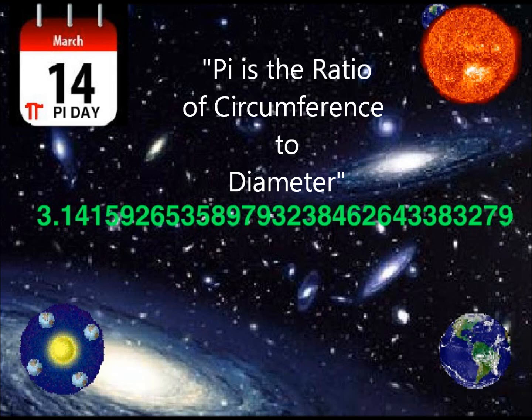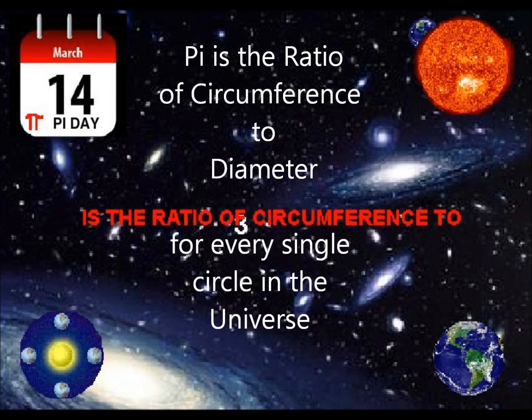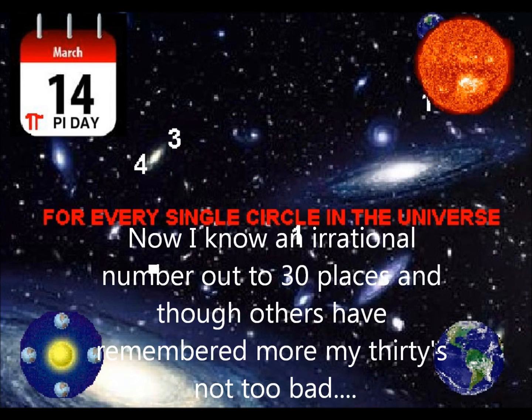Pi is the ratio of circumference to diameter, for each and every circle in the universe. 3.141592653589793238462643383279